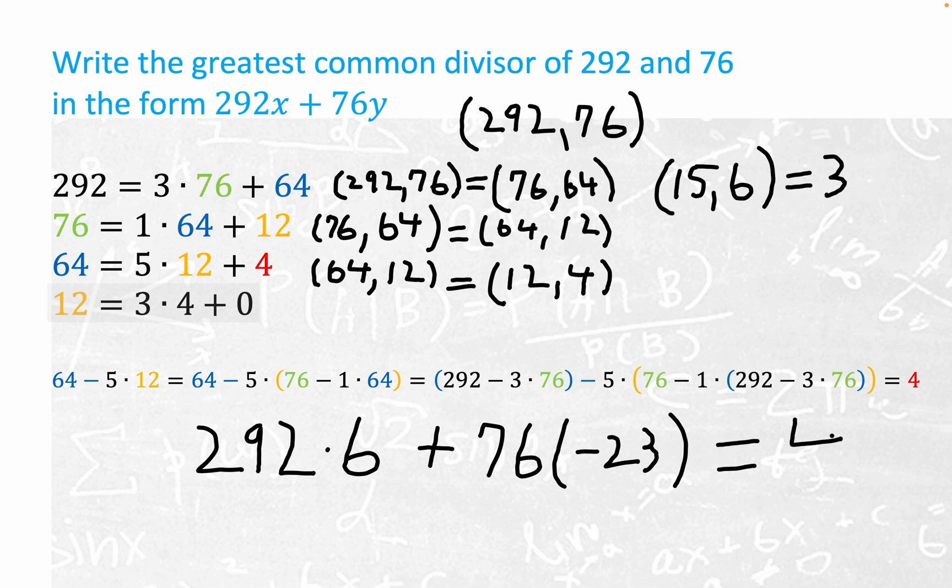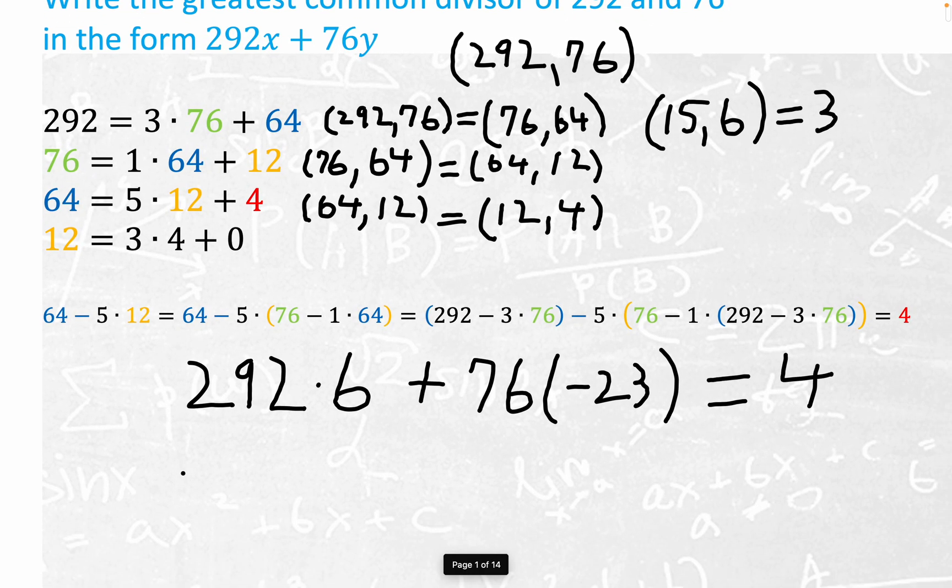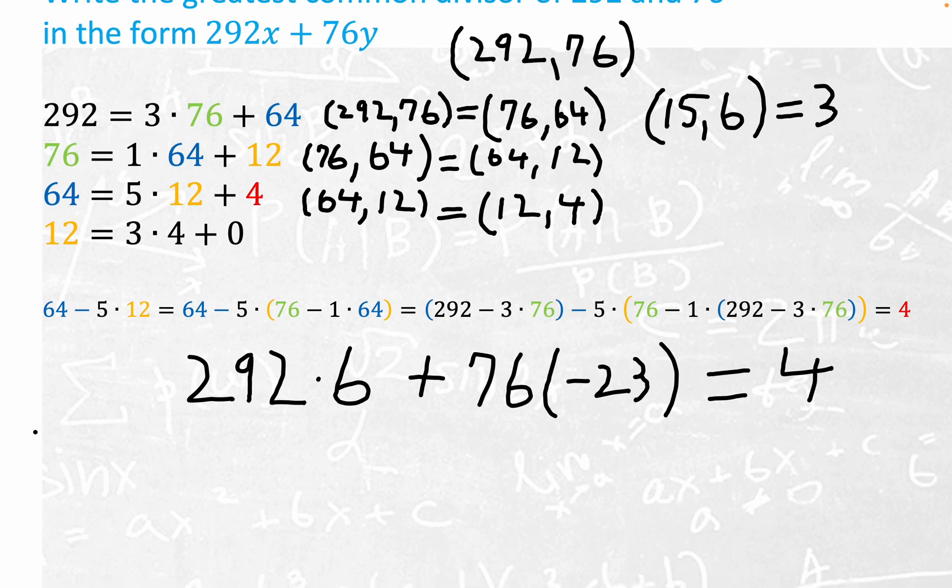That's all I wanted to show you guys. I thought it's kind of neat. The division algorithm guarantees a terminating process right here. And then if you back-substitute, you can write the greatest common divisor as what they call a linear combination of the two numbers it's the greatest divisor of. You may notice, a lot of you would just go, what's the big fuss about this?